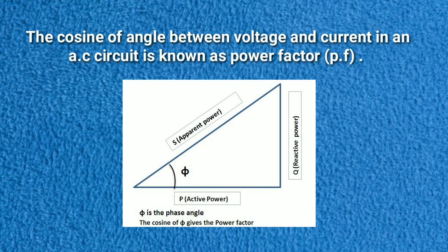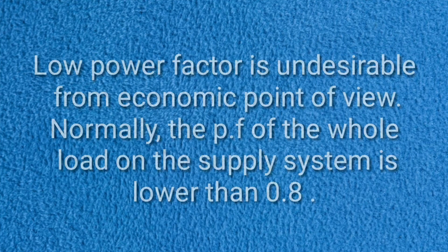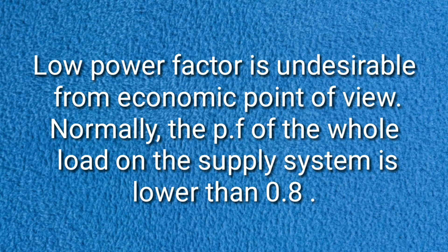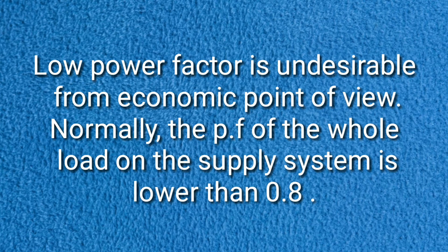The cosine of angle between voltage and current in an AC circuit is known as power factor. Low power factor is undesirable from an economic point of view. Normally, the power factor of the whole load on the supply system is lower than 0.8.